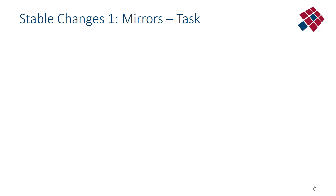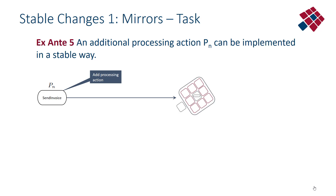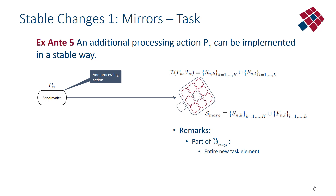Another change you can do in a normalized software system in a stable way is having an additional processing action implemented in a stable way. If you want to add an additional processing action — suppose the send invoice task would not have existed yet — the only thing you have to implement is the actual task element consisting of all the various classes of that task element. The marginal set of new versions of software primitives or classes is the set of classes belonging to that single element — the entire new task element, and that is about it.